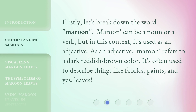Firstly, let's break down the word "Maroon." Maroon can be a noun or a verb, but in this context, it's used as an adjective. As an adjective, Maroon refers to a dark reddish-brown color. It's often used to describe things like fabrics, paints, and yes, leaves.